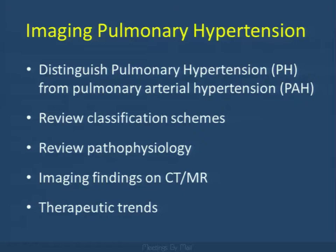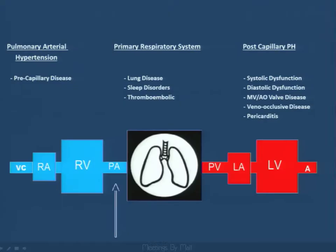We're going to be distinguishing between pulmonary arterial hypertension and pulmonary hypertension per se, looking at the classification schemes applied clinically, reviewing briefly the pathophysiology — there's been a lot of advances over the last decade — and then looking at the CT and MR features you might be asked to assess, and the perspective given by clinicians on therapeutic trends for individuals threatened by this condition.